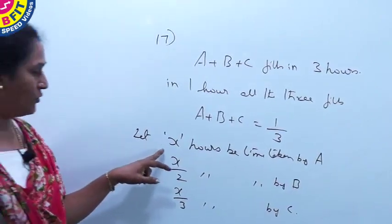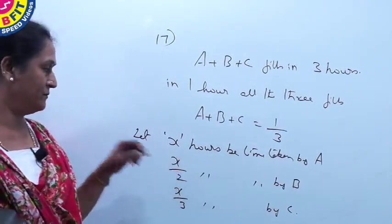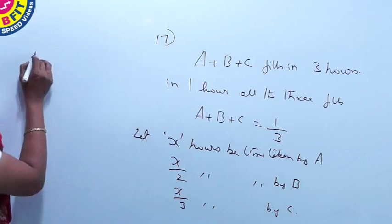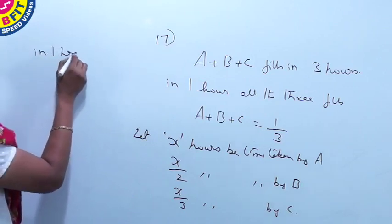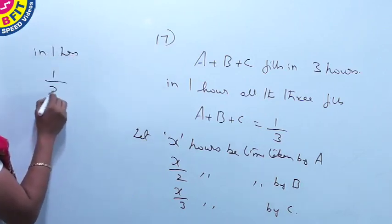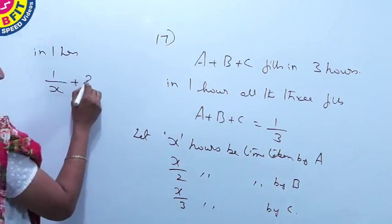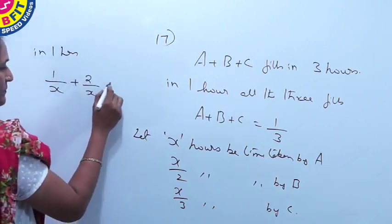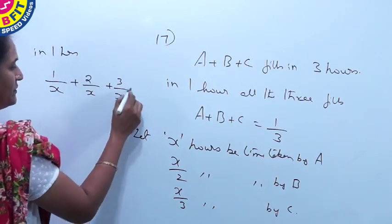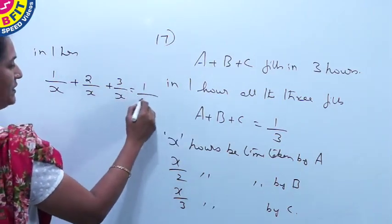So A alone fills the tank in X hours. So in 1 hour, all the taps fill 1 by X plus 2 by X plus 3 by X, which we have got as 1 by 3.